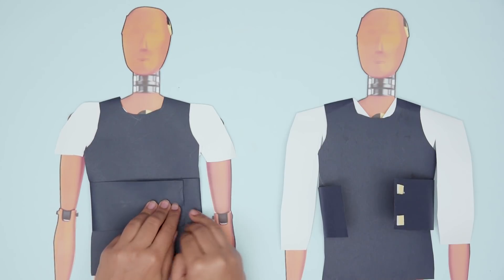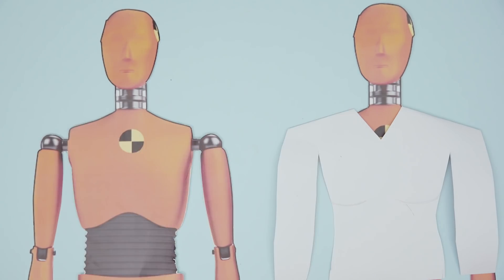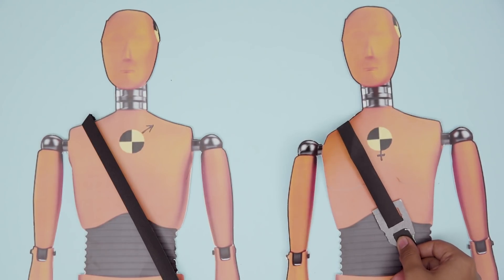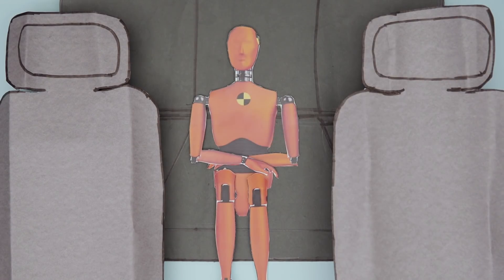From police vests that don't account for boobs, fitness monitors that don't count housework, to crash test dummies that don't account for the female body, technology, from time immemorial to now, has put women in the backseat.